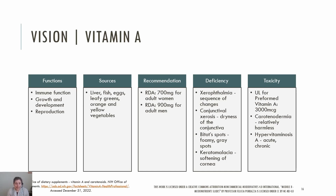Hypervitaminosis A is acute toxicity that can occur within days to weeks after a high dose that is usually 100 times the RDA. Chronic hypervitaminosis A can lead to dry skin, painful muscles and joints, and abnormal liver tests. Toxic levels of vitamin A can also lead to birth defects and miscarriages.